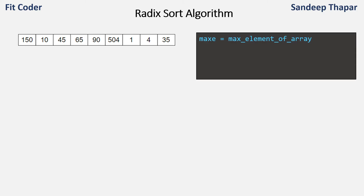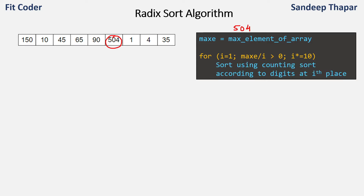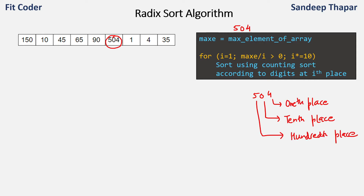The first step of the algorithm is to find the maximum element of the input array. In this example, the maximum element is 504, so the max variable has the value 504. In the second step, we perform an iteration starting from 1 until max divided by i is greater than 0. We run a loop starting from the least significant digit to the most significant digit. For 504, the 1s place, 10s place, and 100s place — in each iteration of this loop, we call Counting Sort to sort the digits at the ith place.